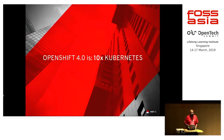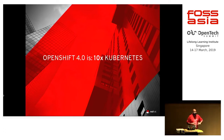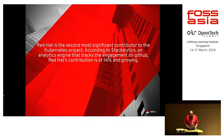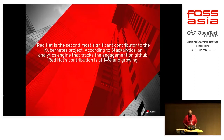When I say Kubernetes, OpenShift is 10 times Kubernetes, because we have added a lot of layers to Kubernetes which will help you create and deploy your applications much faster. Red Hat is the second most significant contributor to the Kubernetes project. According to Stacklyctics, an analytics engine that tracks engagement on GitHub, Red Hat's contribution is at 14% and it's growing.